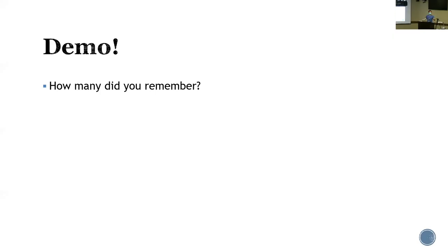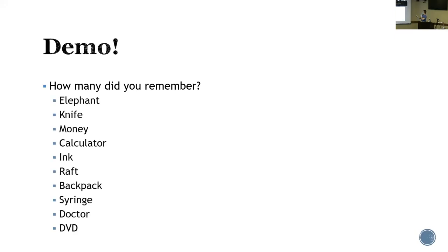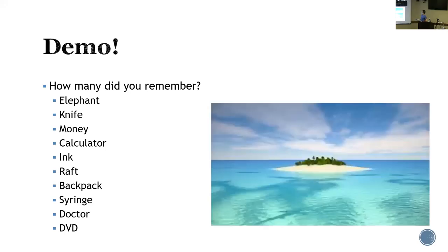How many did you remember? Group one: three, three, four, three, one, three. Group two: three, five, four, three, five, two, three. The most here was four, and the most here was five. We don't have enough participants, but if we have more, it will show that group one will remember this better. And I'm going to show you why.